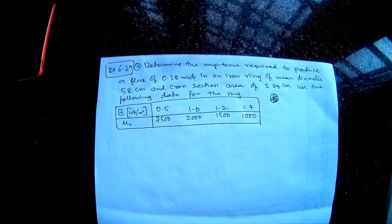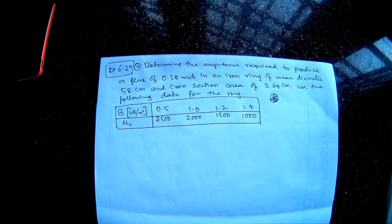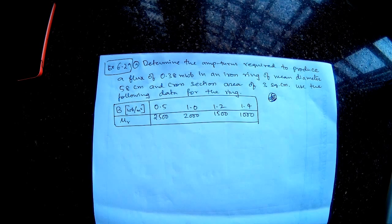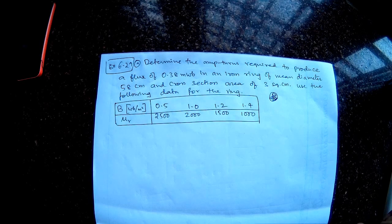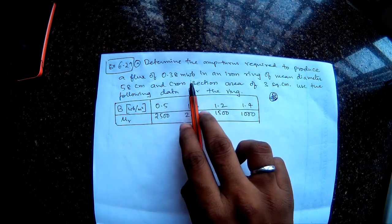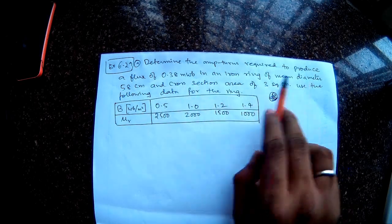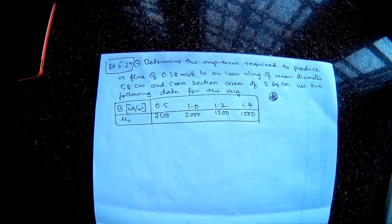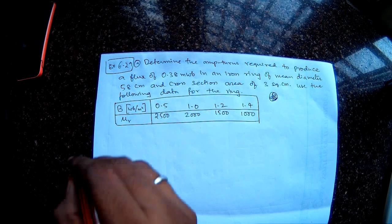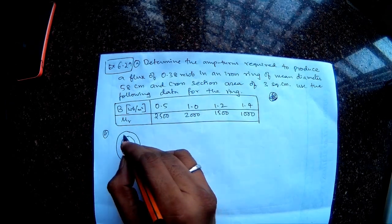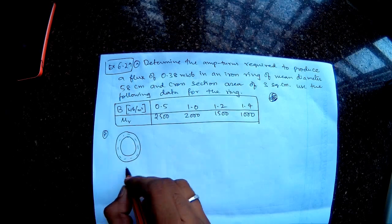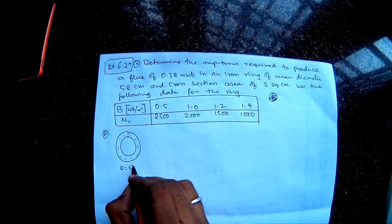Hello everyone, so let's solve one more problem. This is example 6.29 from the book Electrical Technology by B.L. Theraja. Determine the ampere turns required to produce a flux of 0.38 milliwebers in an iron ring of mean diameter 58 centimeters. So let's draw the ring. This is the iron ring and the mean diameter D equals 58 centimeters.